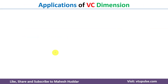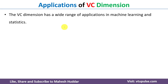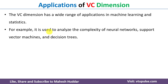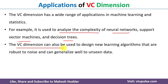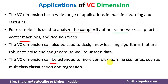Now let us discuss a few applications of VC dimension. It has a wide range of applications in machine learning and statistics. VC dimension can be used to analyze the complexity of neural networks, support vector machines, decision trees, or any other classifiers. It can also be used to design new learning algorithms — similar to neural networks, SVMs, and decision trees — that are robust to noise, can handle noisy datasets, and generalize well to unseen data. Furthermore, VC dimension can be extended to more complex learning scenarios such as multi-class classification and regression.